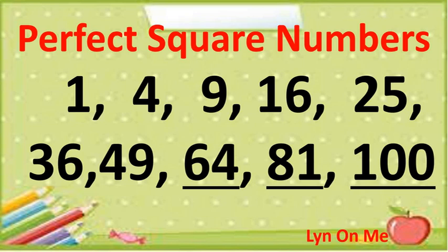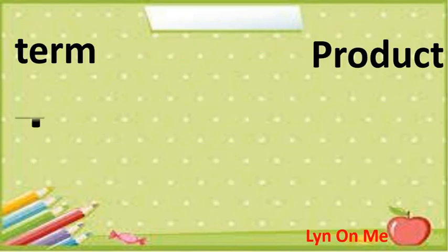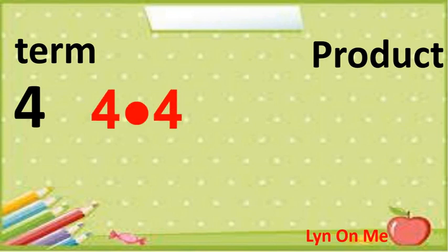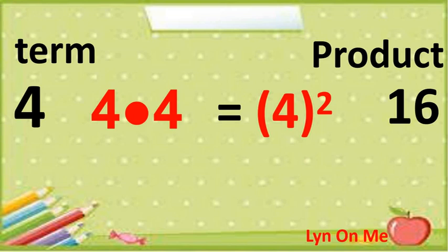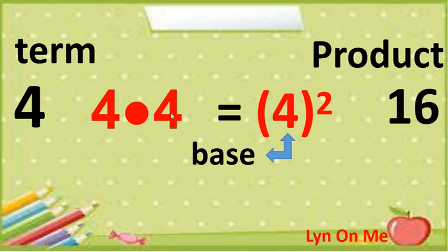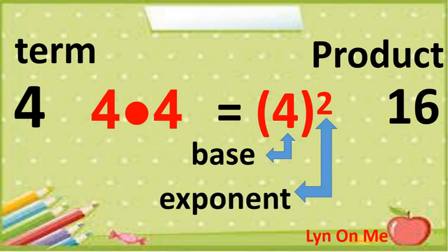What makes an expression a perfect square? Let us have the term four. Four multiplied by four equals sixteen. Four times four can also be written as the square of four — it means four is being multiplied by itself. Four is known as the base or the repeated factor. Two is the exponent; it indicates the number of times the base four occurs in multiplication. On our example, four occurs two times.